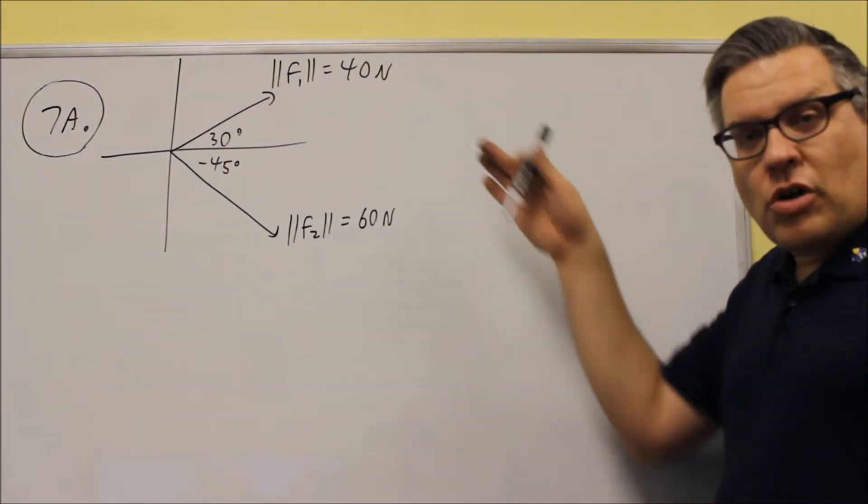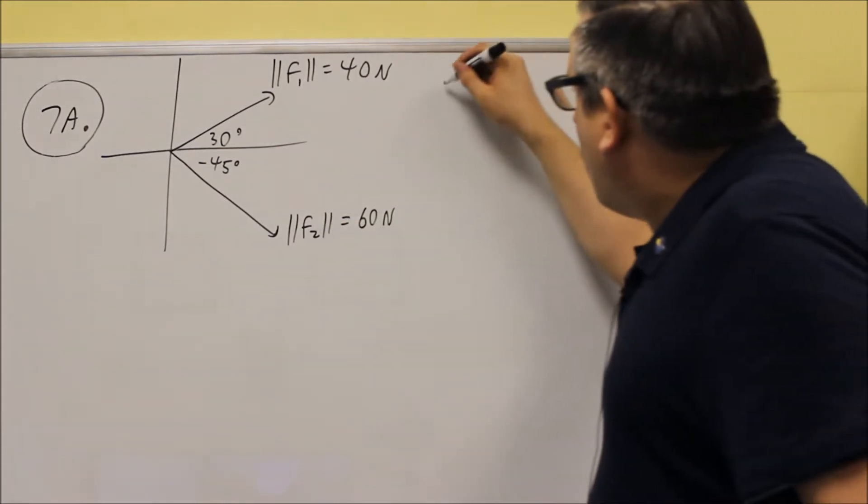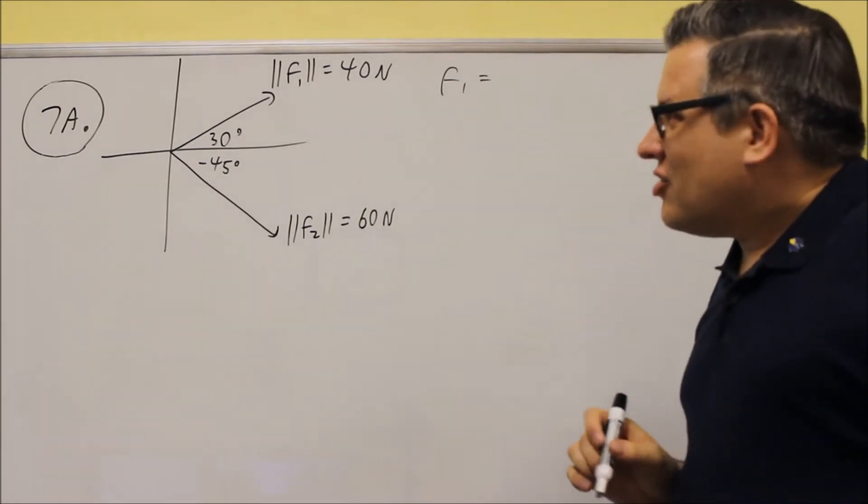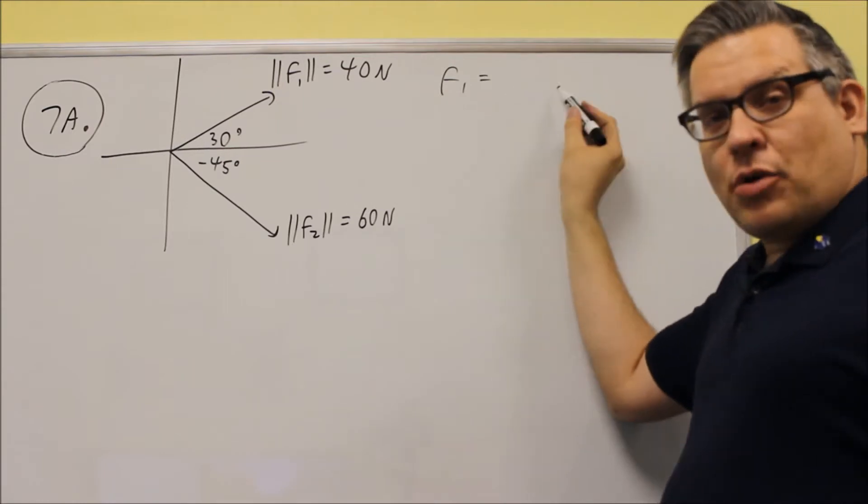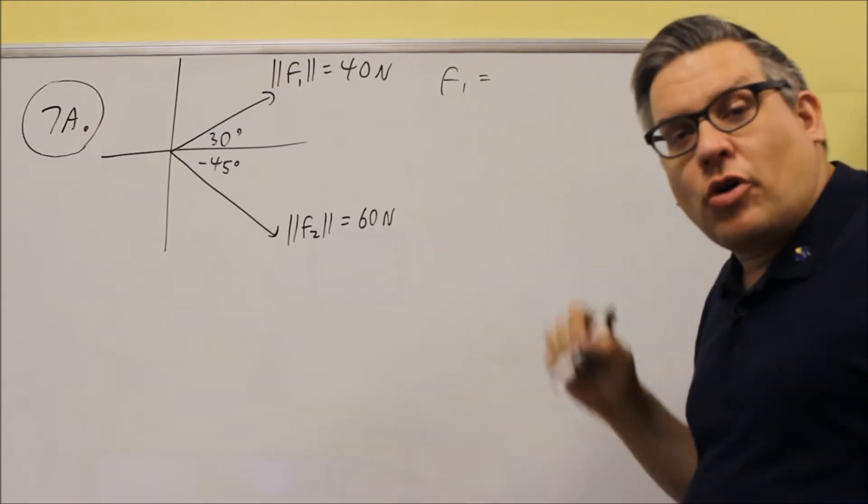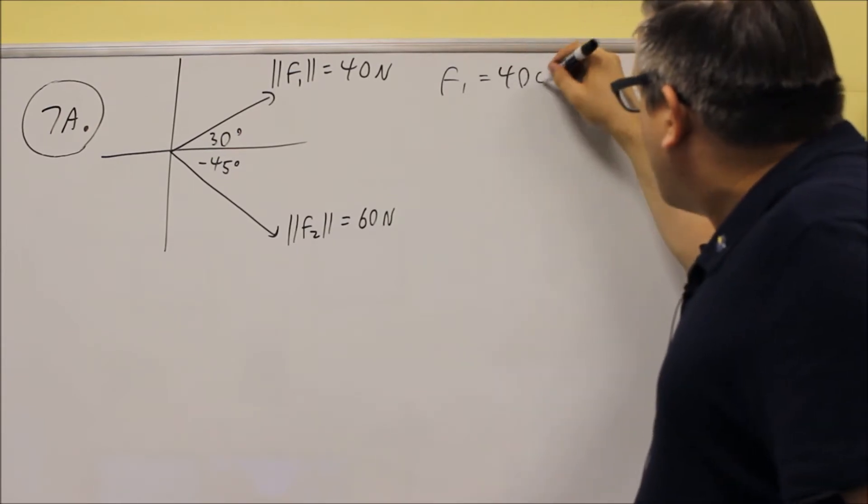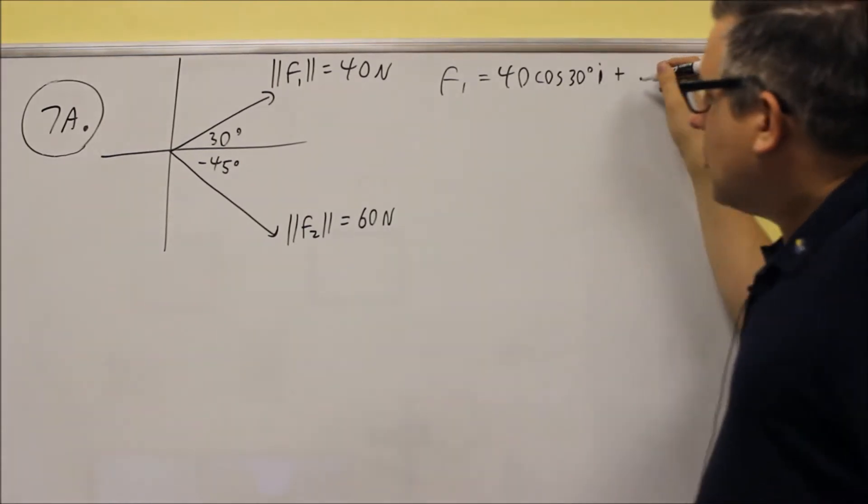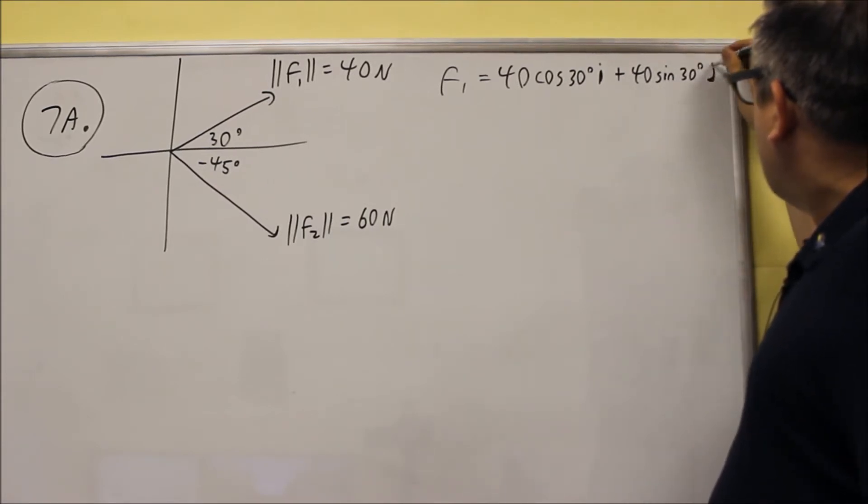What you want to do with the drawing is you want to change this into component form. We have one for F1 and one for F2. For F1, the way you convert that is you've got to take the magnitude and multiply it for the I component. You're working with a cosine. For the J component, you have a sine. So this is going to be, you're going to do 40, and you're going to do cosine 30 degrees, and that's the I plus 40 sine 30 degrees, and that's going to be J.